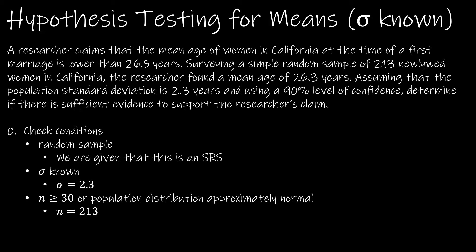Here the question says we have a researcher that claims the mean age of women in California at the time of a first marriage is lower than 26.5 years. Surveying a simple random sample of 213 newlywed women in California, the researcher found a mean age of 26.3 years.